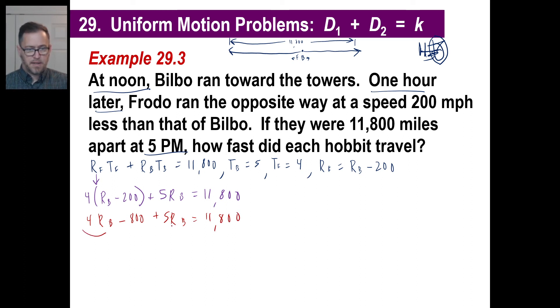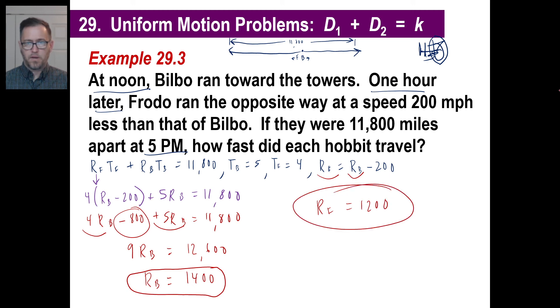I got four of this, I've got five of this. That gives me nine times the rate of Bilbo. I'm going to add 800 to 11,800. That's 12,600. This is where I would use a calculator. The rate of Bilbo was 1,400. Then they asked how fast did each one travel? Well, then the rate of Frodo is going to be the rate of Bilbo, which is 1,400 minus 200. So 1,400 minus 200, which is 1,200. So there we go.